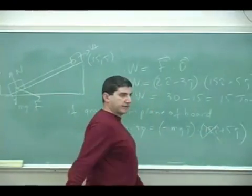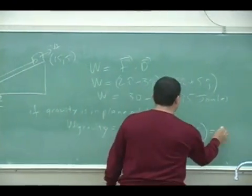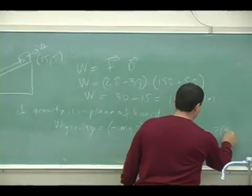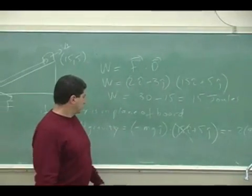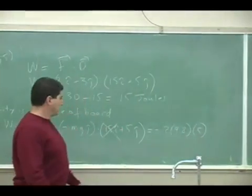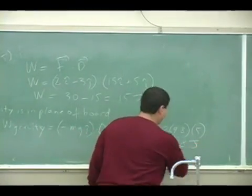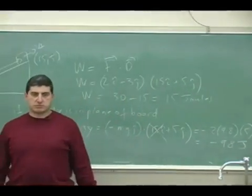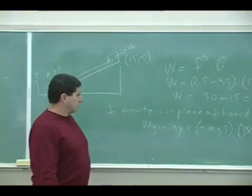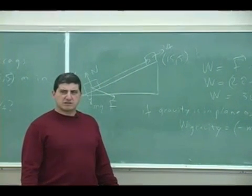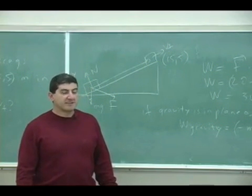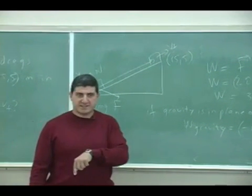So this thing doesn't even care about that. So then it would be negative, what's the mass? So negative 2 times 9.8 times 5, negative 98 joules, okay? Well, if gravity does negative 98 joules, you do 15 joules, that thing ain't going up unless it had an initial velocity, okay?